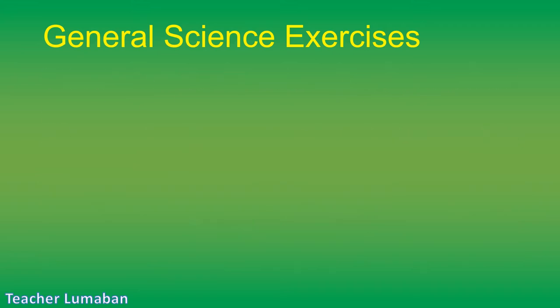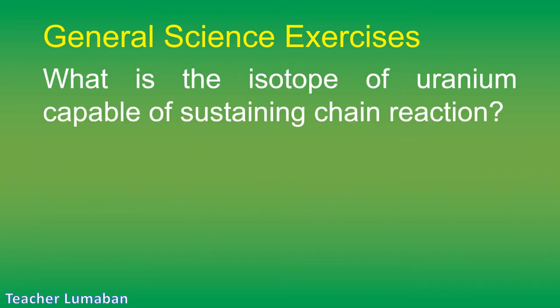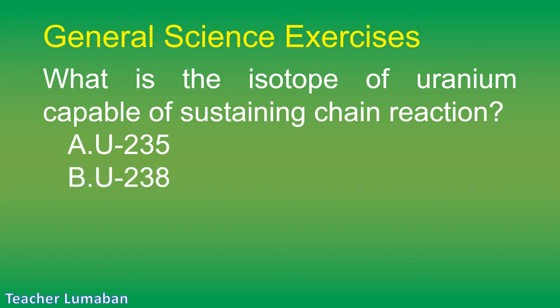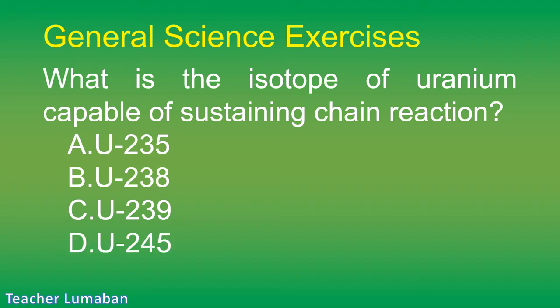What is the isotope of uranium capable of sustaining a chain reaction? Letter A: U-235. Letter B: U-238. Letter C: U-239. Letter D: U-245.